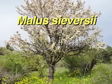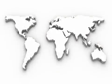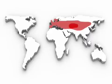Malus domestica, the apple, descended from the wild species Malus sieversii in Central Asia. There are over 50 wild Malus species found in Europe and Asia, some of which are sexually compatible with the domesticated apple.